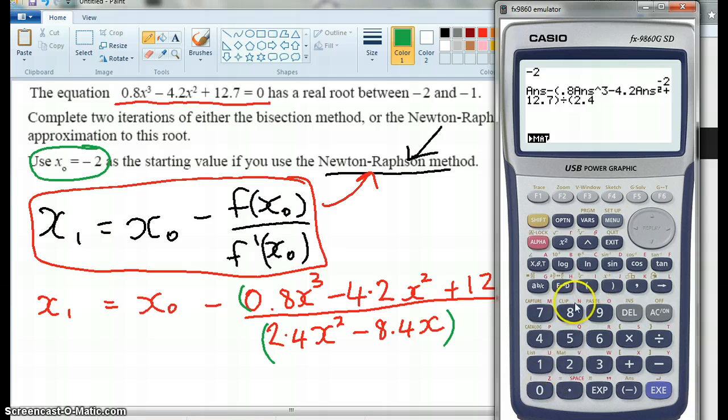shift answer squared minus 8.4, shift answer, and our first iterate.